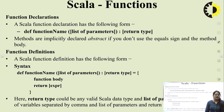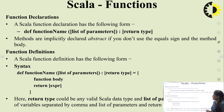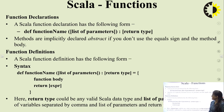Next is Scala functions. Scala has functional programming methods. It offers many built-in functions and enables us to create user-defined functions. The syntax for function declaration is: def functionName(listOfParameters): returnType. Methods are implicitly declared abstract if you do not use the equal sign and the method body.